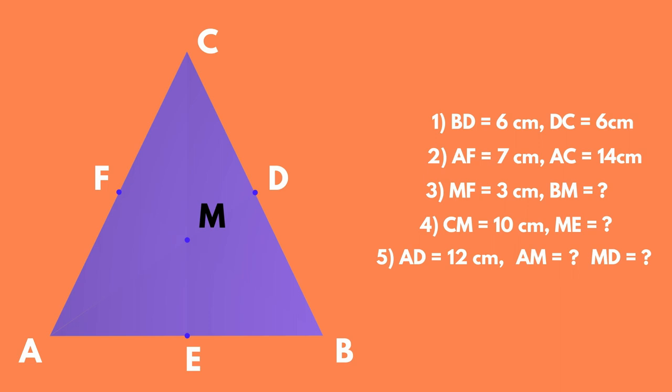MF is the shorter segment of the two that the centroid M divides the median BF. That means BM equals 2 MF equals 6 cm. CM is the longer segment of the two the centroid M divides the median CE. That means ME equals CM divided by 2 equals 5 cm. AD is a median. AD equals AM plus MD, but AM equals 2 MD.